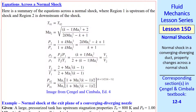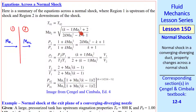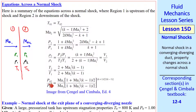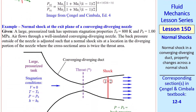Everything we've discussed so far has been qualitative. Now let's look at some of the equations across a normal shock. We're in a stationary shock frame of reference, with the flow from left to right. Here are some of the equations across a shock, which I show without derivation. Stagnation temperature is one of the few things that remain constant across a shock. Here's an equation for Mach number 2 as a function of Mach number 1 and the ratio of specific heats. In our textbook, we give two different equations for P2 over P1, the ratio of pressures. We also give expressions for density ratio, temperature ratio, and finally P2 over P1.